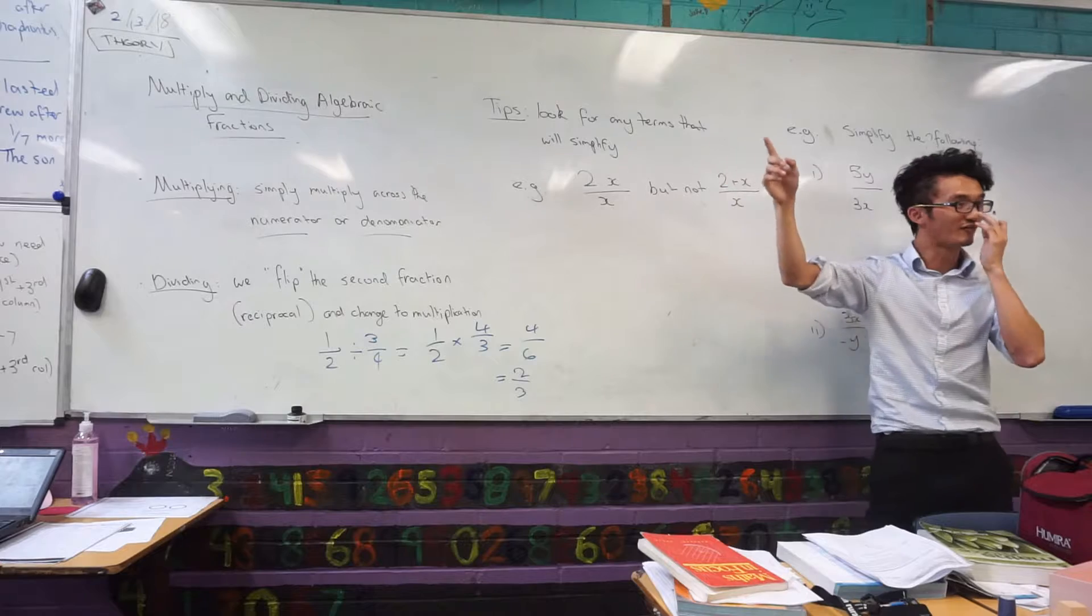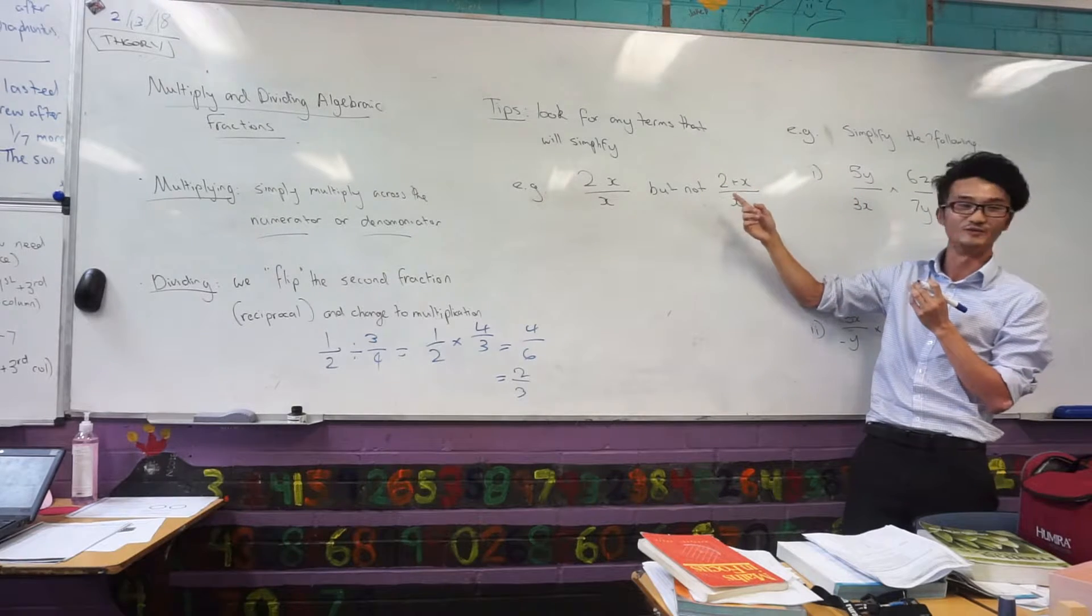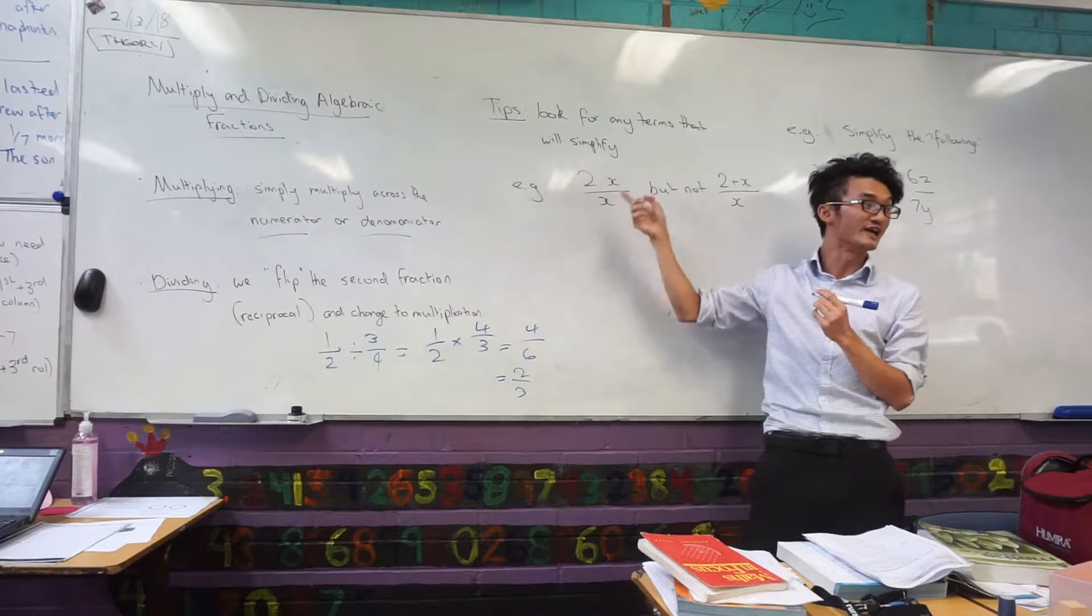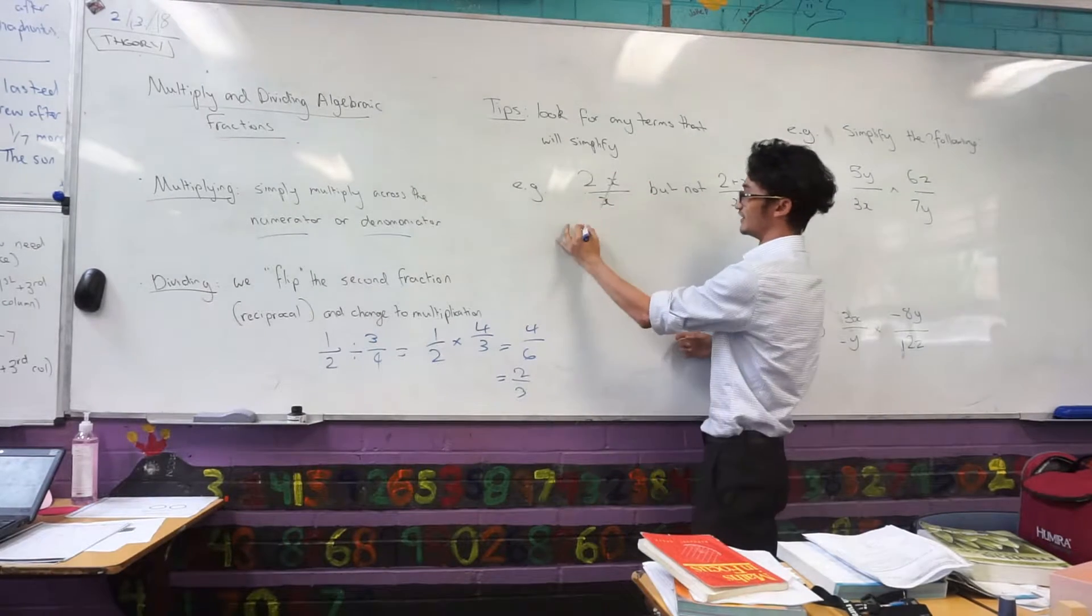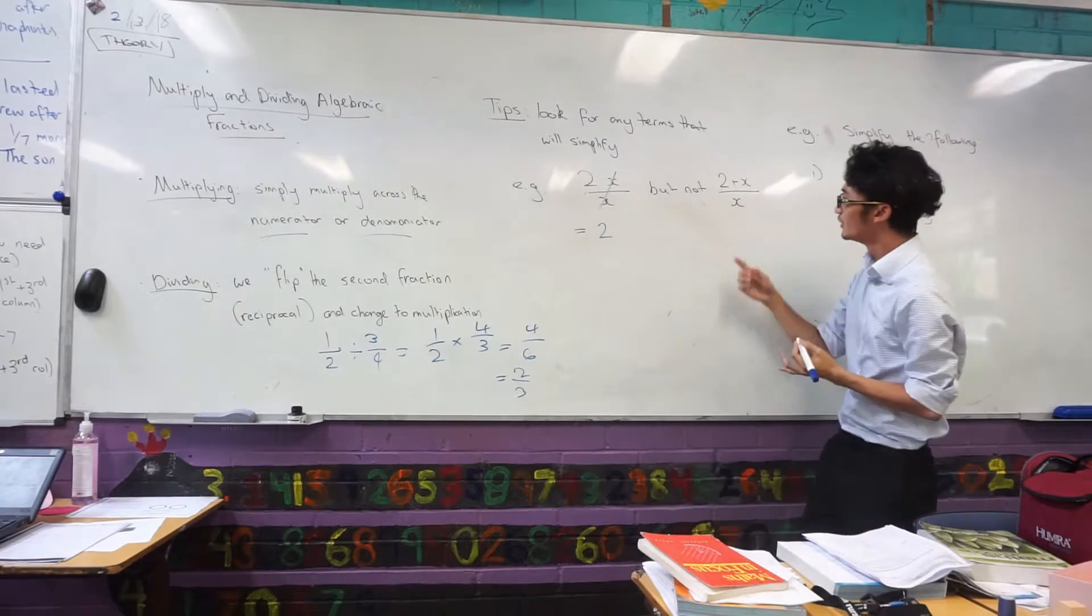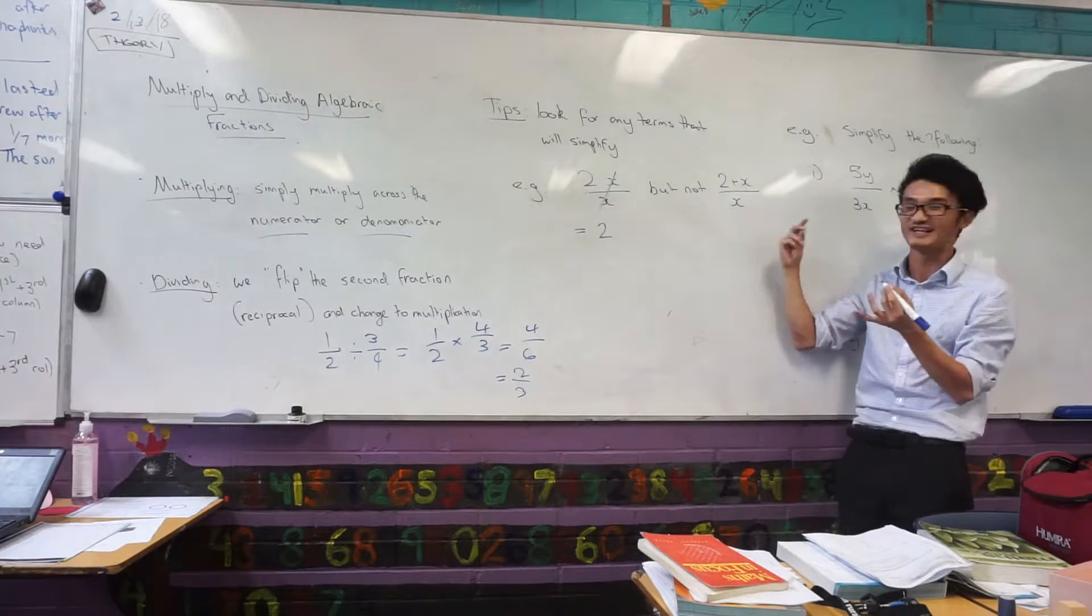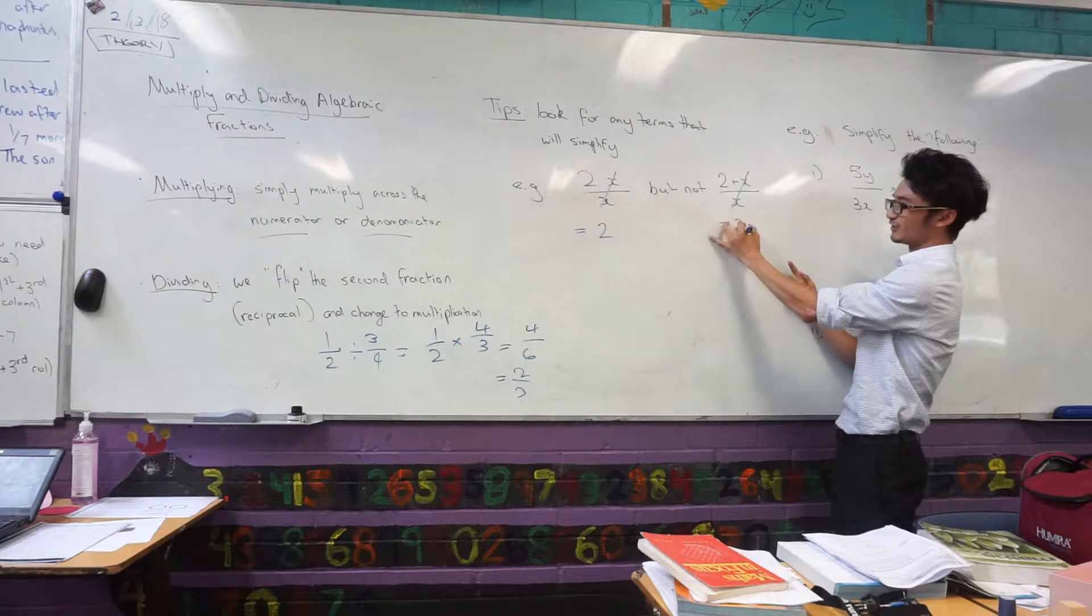Now, something that you want to look out for is simplifying, right? For simplifying them, I know that these ones here, I could just divide through the x's here. I can divide through the x's there, that would just be 2. This one here, I see often that students will also, they just see x and x here, and they say, oh, I can divide it, and that would equal 2 as well.